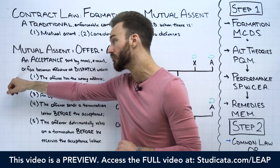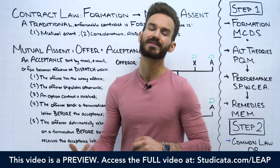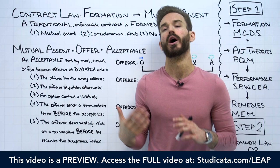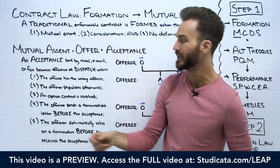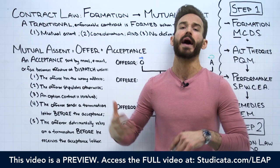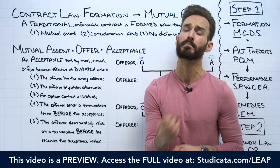Our second exception is when the offeror stipulates otherwise. Remember, the offeror is master of the offer, so the offeror can simply turn the mailbox rule off by including in the terms of the offer that acceptance is effective upon receipt — in which case the mailbox rule does not apply.